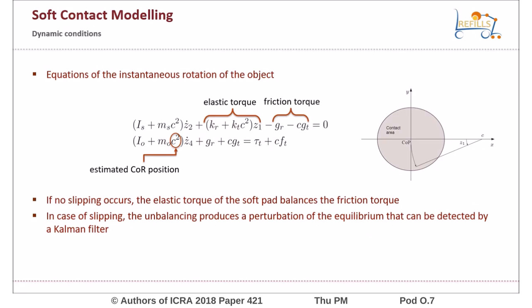The estimated core is used in a one-off model of the instantaneous rotation of the object. If no slipping occurs, the elastic torque of the soft pad balances the friction torque. In case of slipping, the unbalancing produces perturbation of the equilibrium that can be detected by a properly designed Kalman filter.